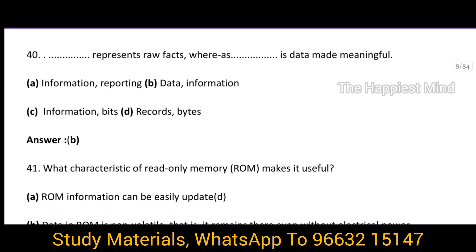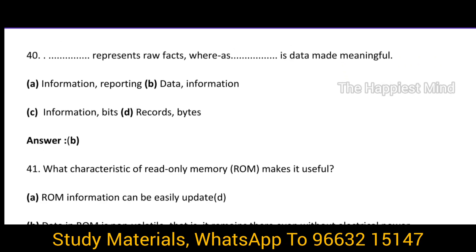Question 40. What represents raw facts, whereas what is data made useful? The answer is option B — that is data and information. Data represents the raw facts, whereas information is the data which is made meaningful.